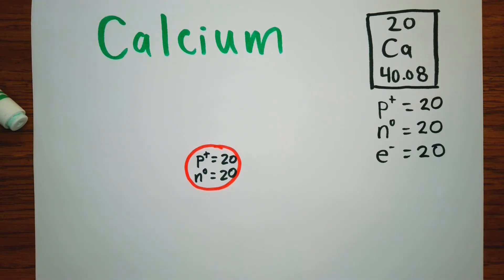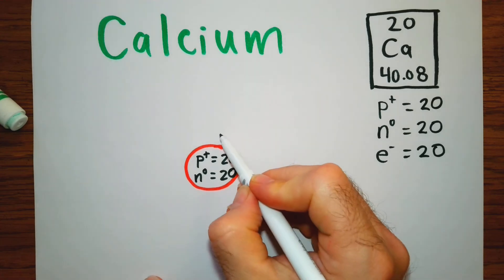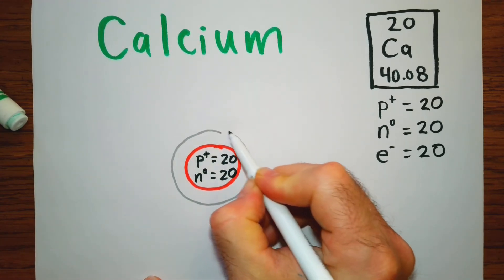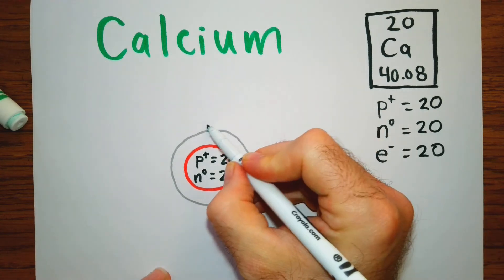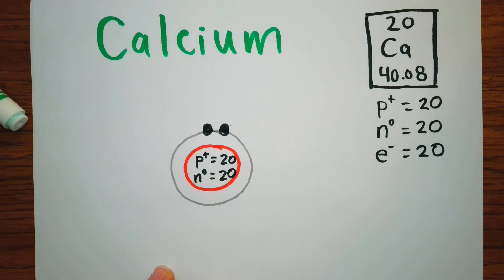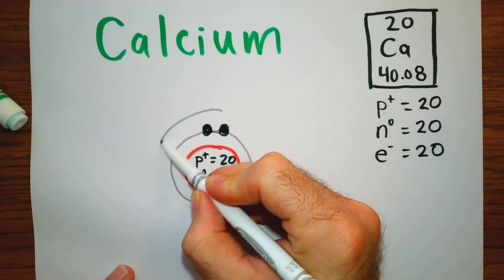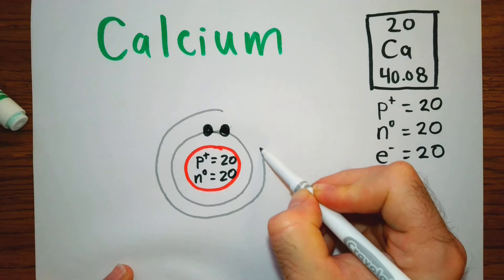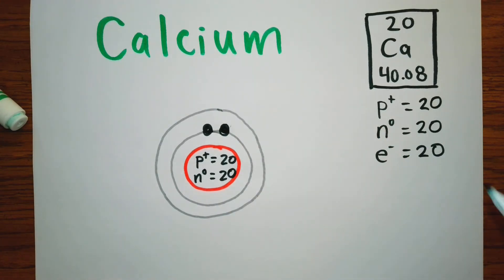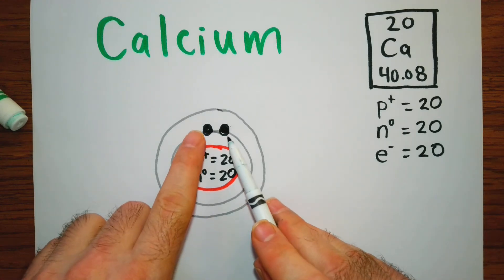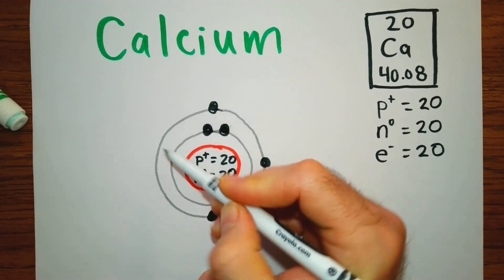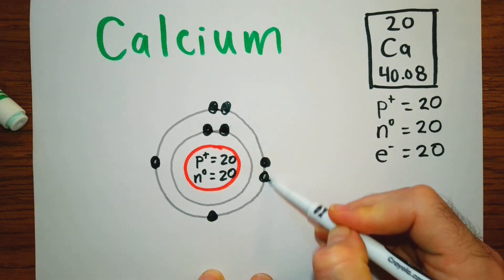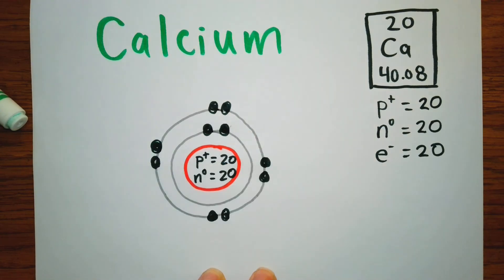Next we draw our orbitals. This first orbital can hold a maximum of two — we have 20 electrons to place, so we fill the first orbital with both electrons; you have to fill the lower orbitals first. In our second orbital, which can hold a maximum of eight, we have two so far and still need 18 more, so we add one through eight, filling the second orbital completely.